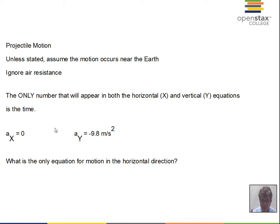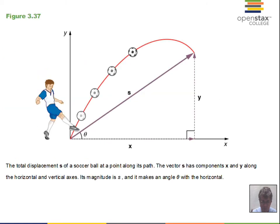What is the only equation for motion in the horizontal direction? If the acceleration is zero, the four equations of motion simplify to just distance equals rate times time. That rate in the x direction will be constant because there's no acceleration. In the vertical direction, the acceleration due to gravity changes the rate, so we have to use the full set of four kinematic equations.